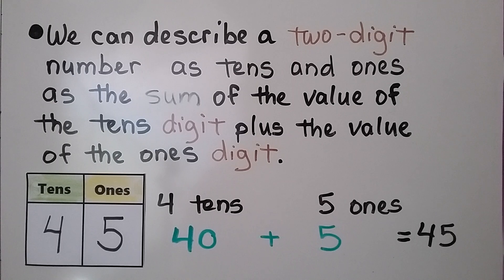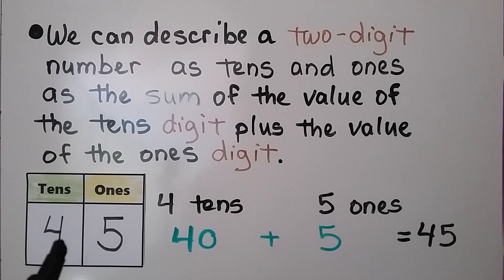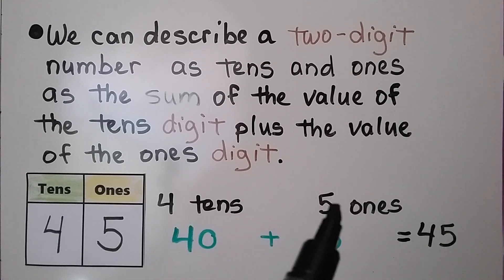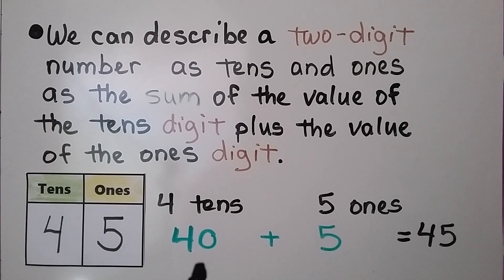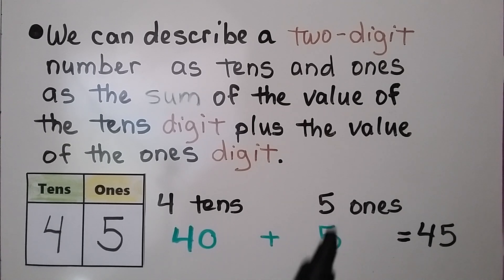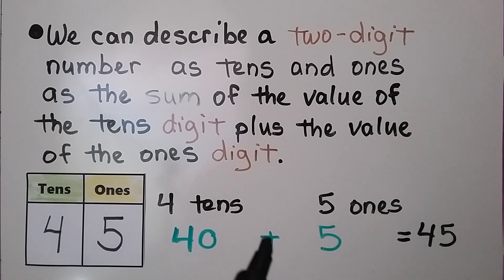What does that mean? It means we can show the number 45 as the number of tens and ones: four tens and five ones. The value of the tens digit — four tens — is 40, plus the value of the ones digit — five ones — is five. So we have 40 plus five, which equals 45.